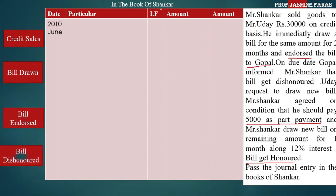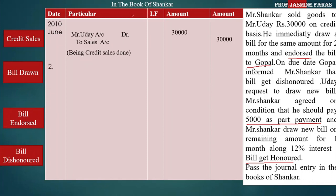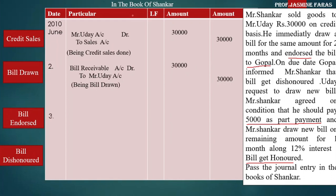In the books of Shankar, we do four steps: credit sales, bill draw, bill endorse, and bill dishonor. Credit sale entry — Uday account debit to sales account, being credit sales done, 30,000. Then we draw the bill: bill receivable account debit to Uday account, 30,000, being bill drawn. I have explained this in my previous video, so please watch that first if you haven't.